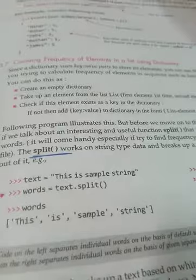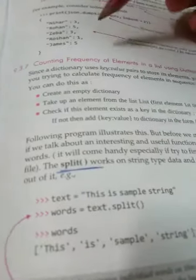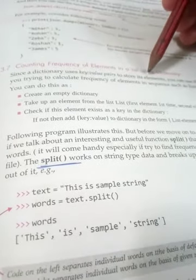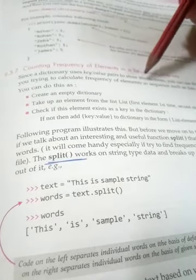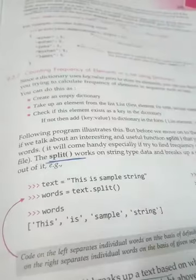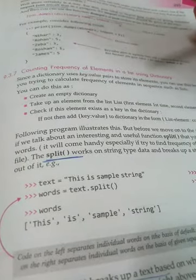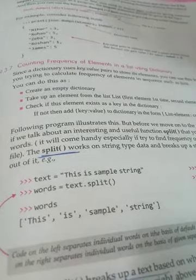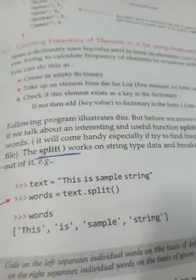The next part is counting the frequency of elements in a list using a dictionary. Since a dictionary uses key-value pairs, you can use this feature effectively to calculate the frequency of elements in a sequence such as a list. The basic steps are: create an empty dictionary, take each element from the list, check whether the element exists as a key in the dictionary, and if not, add it to the dictionary.